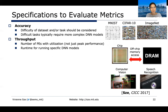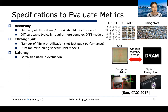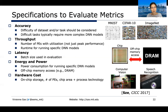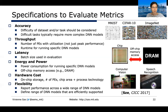Throughput: the number of PEs should be reported in addition to utilization, not just peak performance. One way to report throughput is the runtime for running specific DNN models. Latency is also very critical — batch size affects latency; larger batch sizes may allow high throughput but also increase latency, so reporting batch size is key. For energy and power, we should report power consumption running specific DNN models, not just peak efficiency in TOPS per watt, and include off-chip memory access since DRAM energy is quite significant.